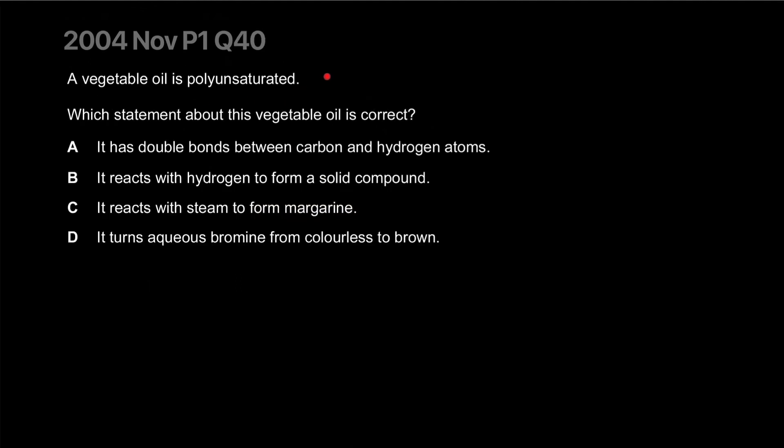Vegetable oil is polyunsaturated, which means it has carbon-carbon double bonds. Which statement is correct? Hydrogen atoms can only make one bond. It reacts with hydrogen to form a solid compound. That's margarine. The double bonds go away and the product has a slightly higher boiling point. It turns aqueous bromine from brown to colorless. The correct answer is B.